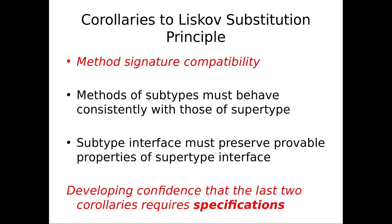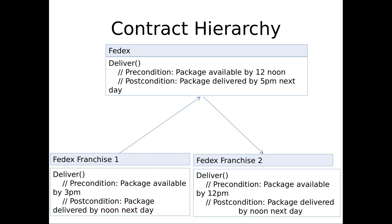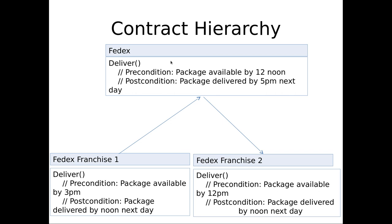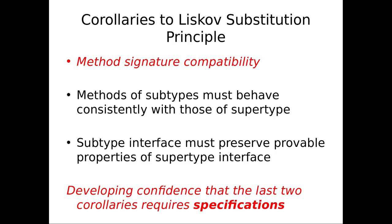The Liskov substitution principle is all about recognizing whether these franchises or subtypes are legitimate instances of the supertype. It has everything to do with reasoning about preconditions and postconditions, but extends beyond that to invariants and history properties. There are basically three major issues you've got to deal with.